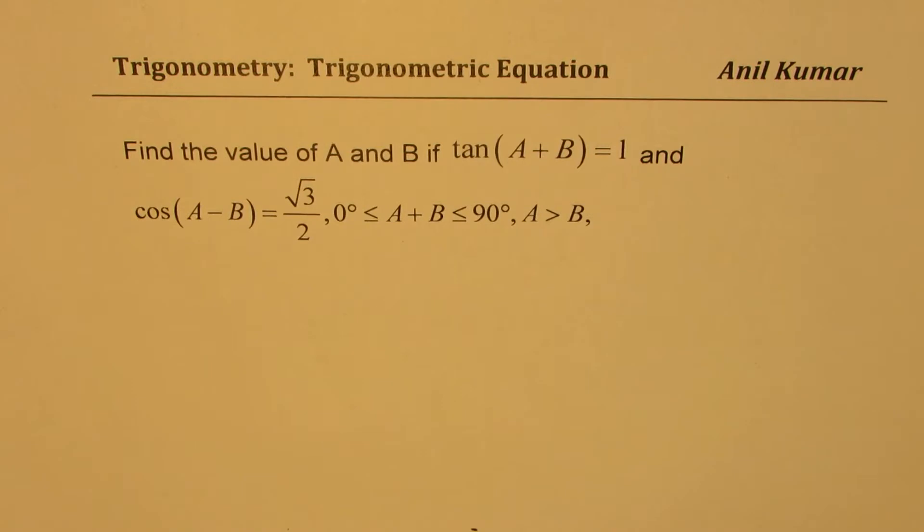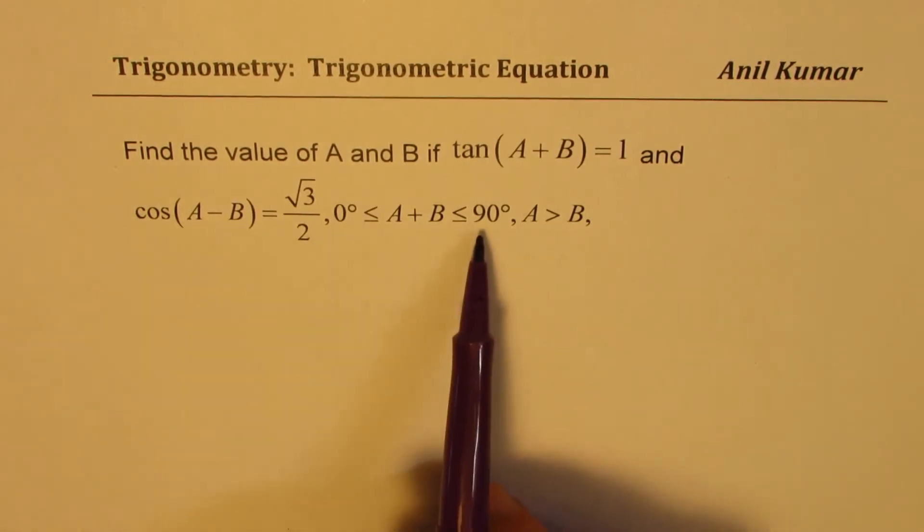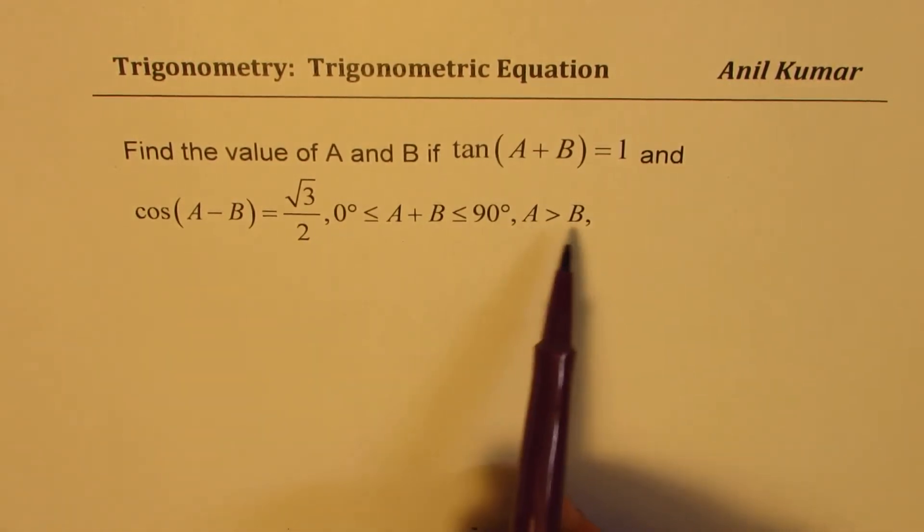The question here is: find the value of A and B if tan(A+B) = 1 and cos(A-B) = √3/2, where 0° < A+B < 90°, A > B.